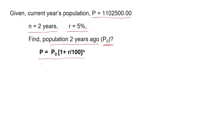We have the formula: P equals P0 multiplied by one plus r divided by 100, raised to the power N. Substituting the values: 1,10,25,000 equals P0 multiplied by one plus five divided by 100, raised to the power 2.